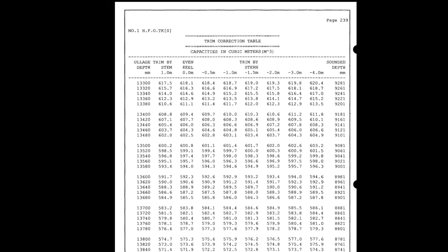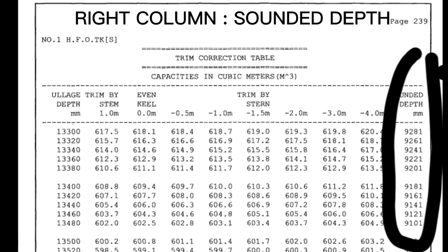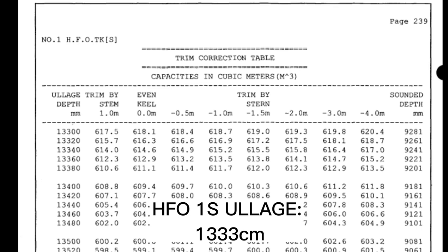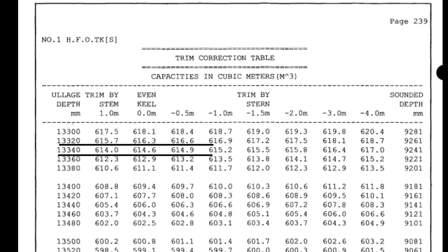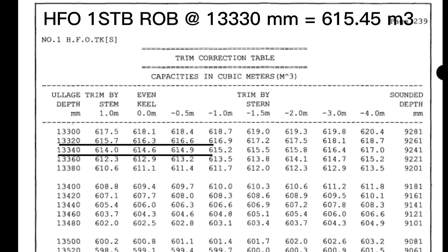Let's check the measured sounding of engine cadet. Left column: ullage depth. Right column: sounded depth. List and trim: zero. First is ullage of HFO Bunker Tank 1 starboard. Since 1333 cm is in between 13,320 and 13,330 mm, 1,333 cm is between 616.3 and 614.0 cubic meter. HFO 1 STB ROB at 13,330 mm equals 615.45 meters cubed.